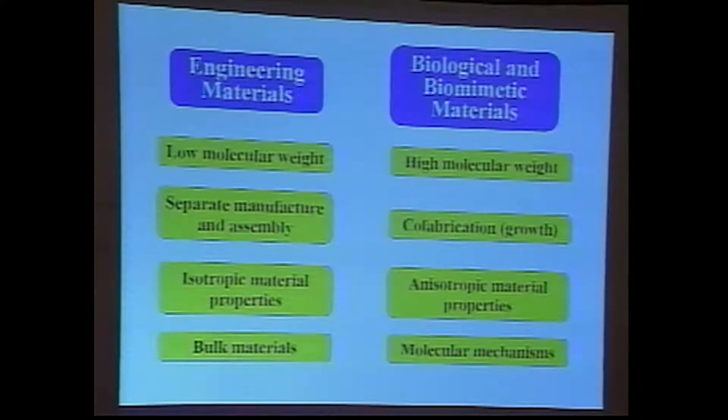On your left there, I have some of the salient features of current engineering practice where we normally use low molecular weight materials such as copper, iron, aluminum, silicon. Existing engineering systems are characterized by separate manufacture and assembly. Whereas in nature, things are grown. They're co-fabricated. And of course, nature's materials are high molecular weight. Most engineering materials, the material properties are isotropic, whereas biological materials are normally highly anisotropic.